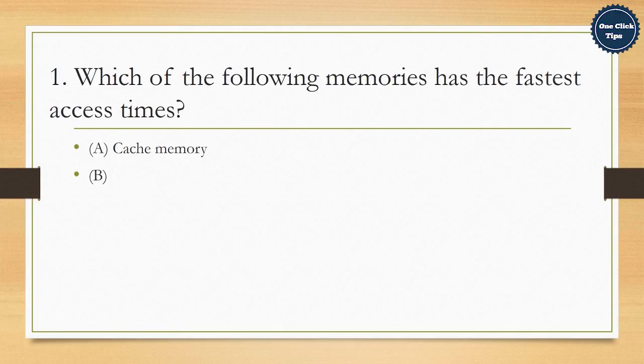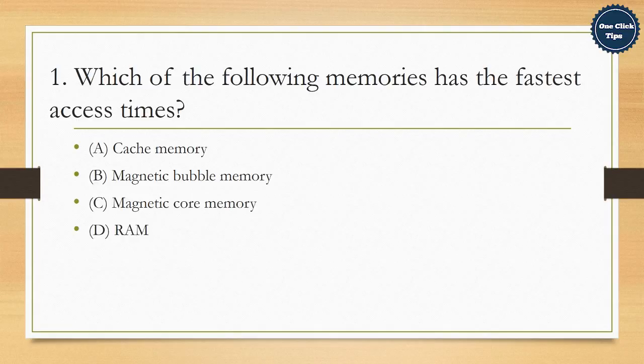1. Which of the following memories has the fastest access times? A. Cache memory, B. Magnetic bubble memory, C. Magnetic core memory, D. RAM. The correct answer is A. Cache memory.